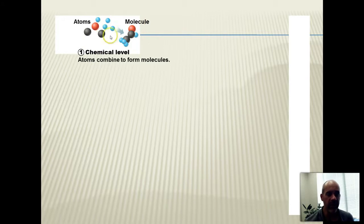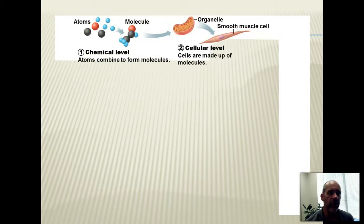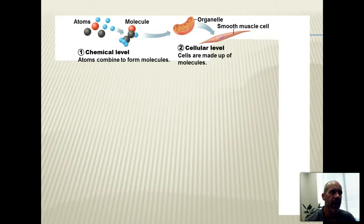Atoms — things like carbon, hydrogen, and oxygen — get bonded together to build molecules. Molecules include things like water molecules, amino acids, sugars like glucose, proteins, and DNA. All of those things constitute your chemical building blocks for everything in the body.